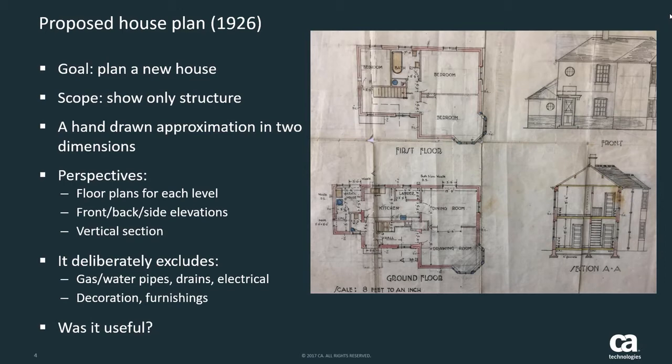The scope of the plan, as you can see, just describes the structure. It doesn't mention furnishings, wallpaper, or furniture. It's just the structure — internal and external — of the building, seen from different perspectives. It deliberately excludes the services: gas and water pipes, the drains, the electrical. Was this model useful? Well, I think so, because it's a plan of my house, long before my time. So I guess the model was actually useful in the first instance.